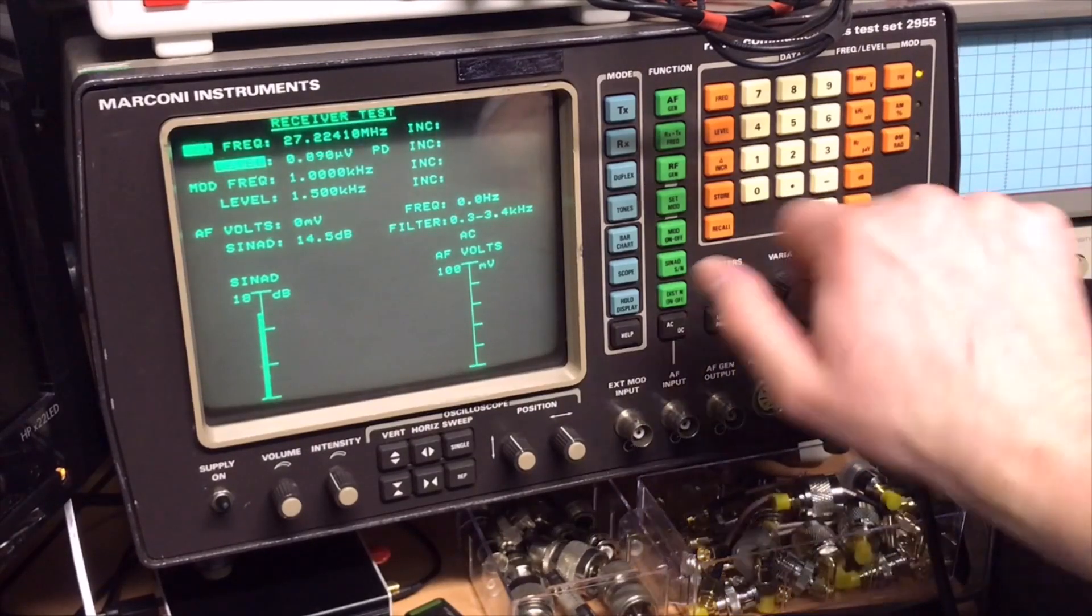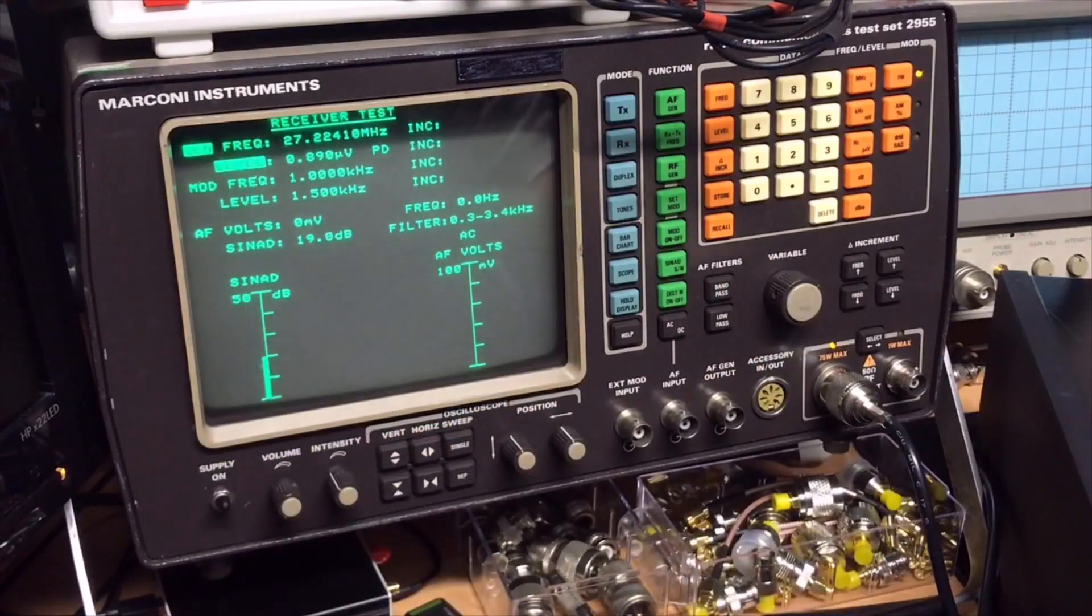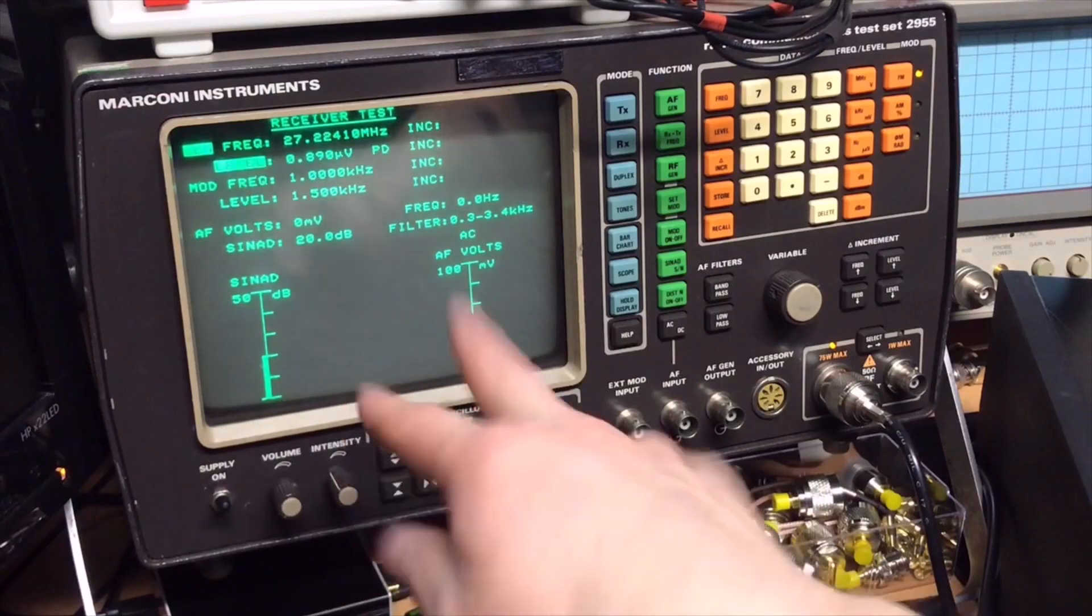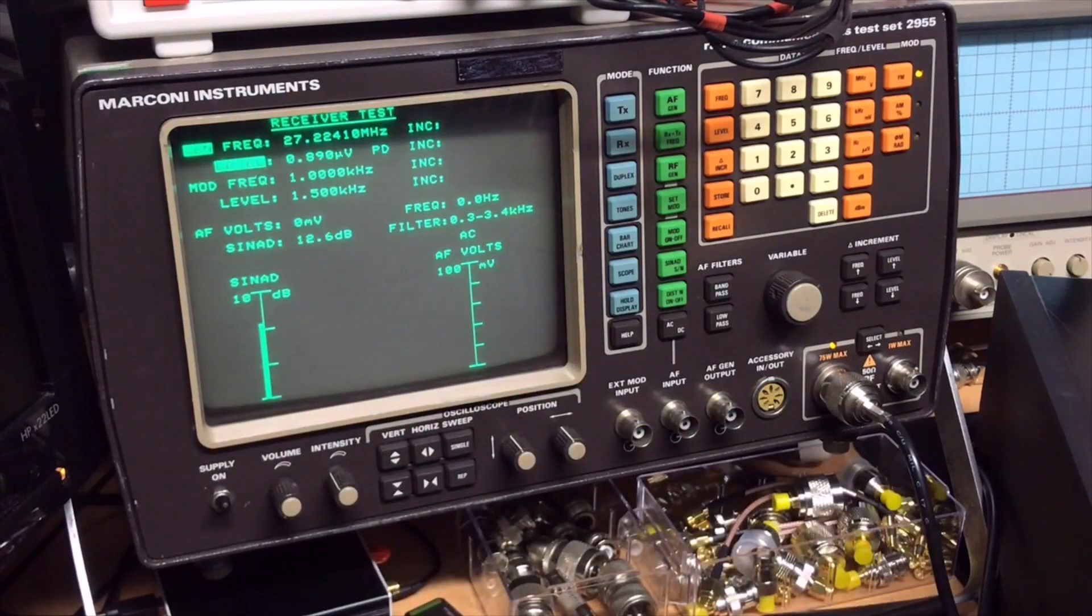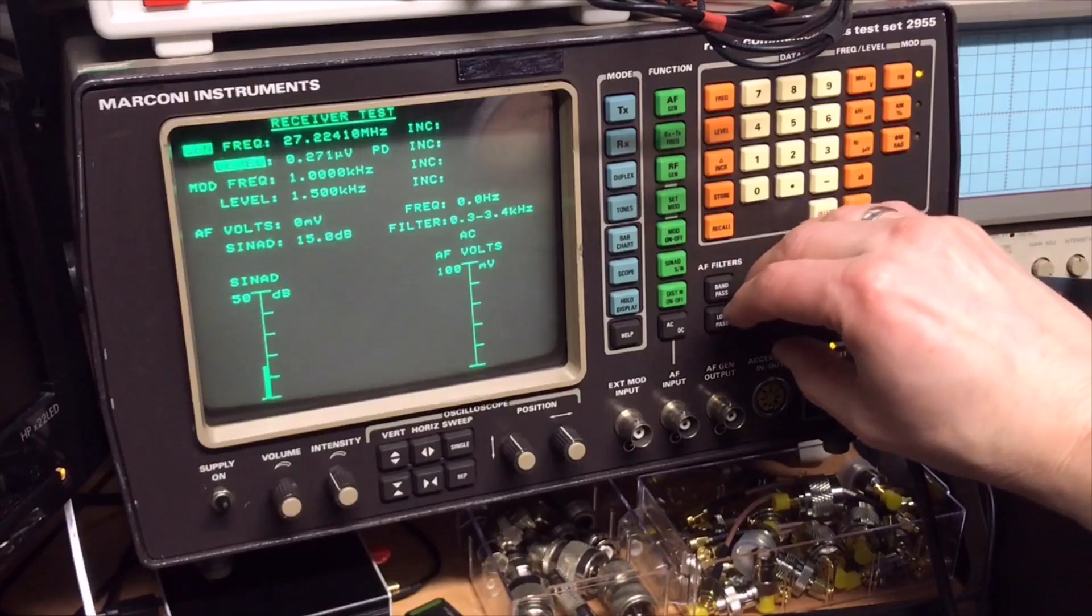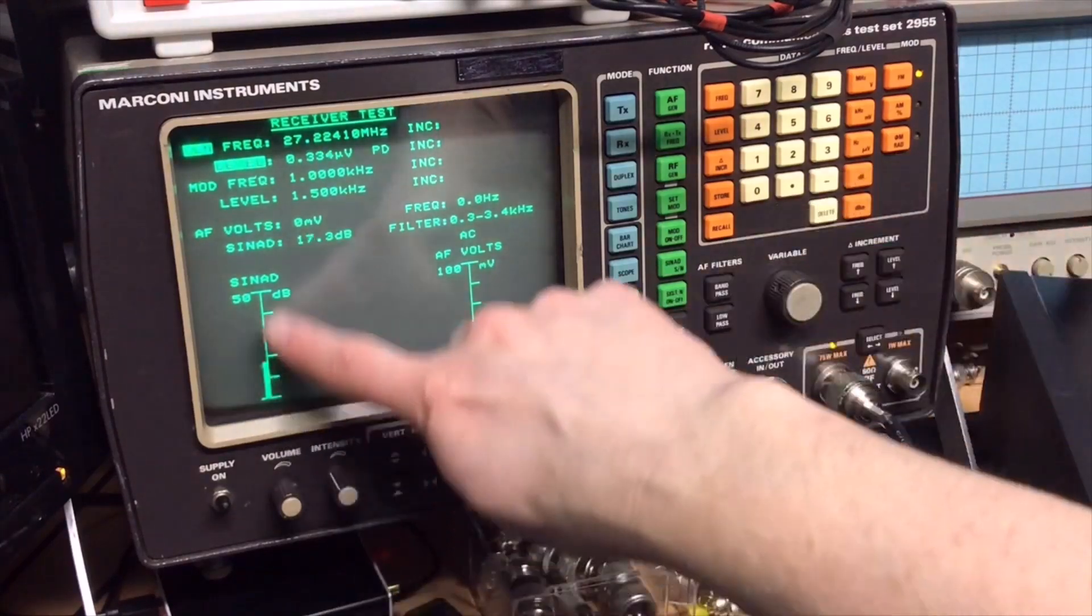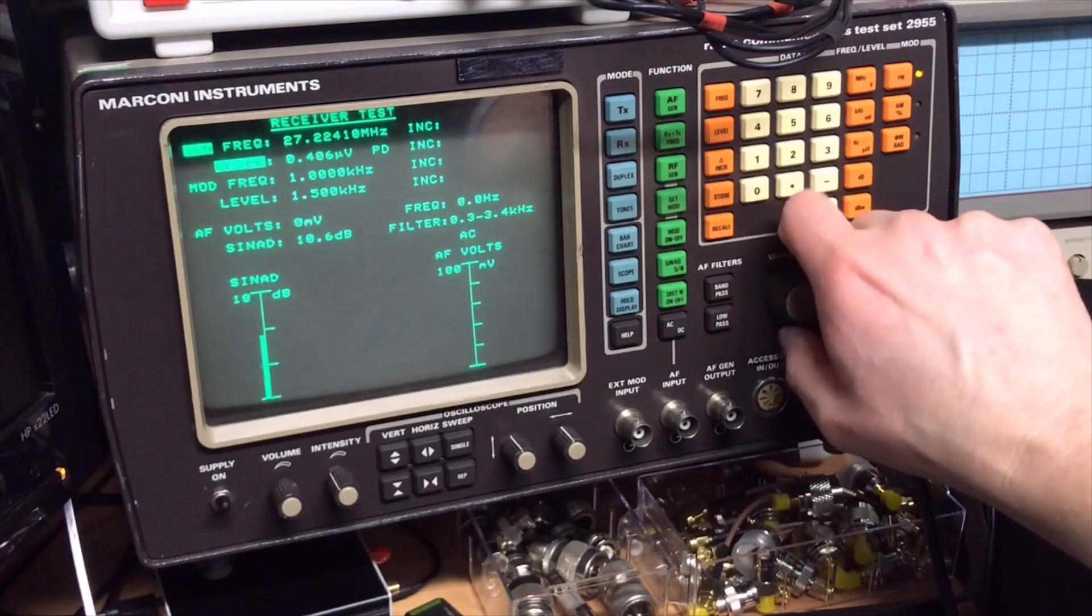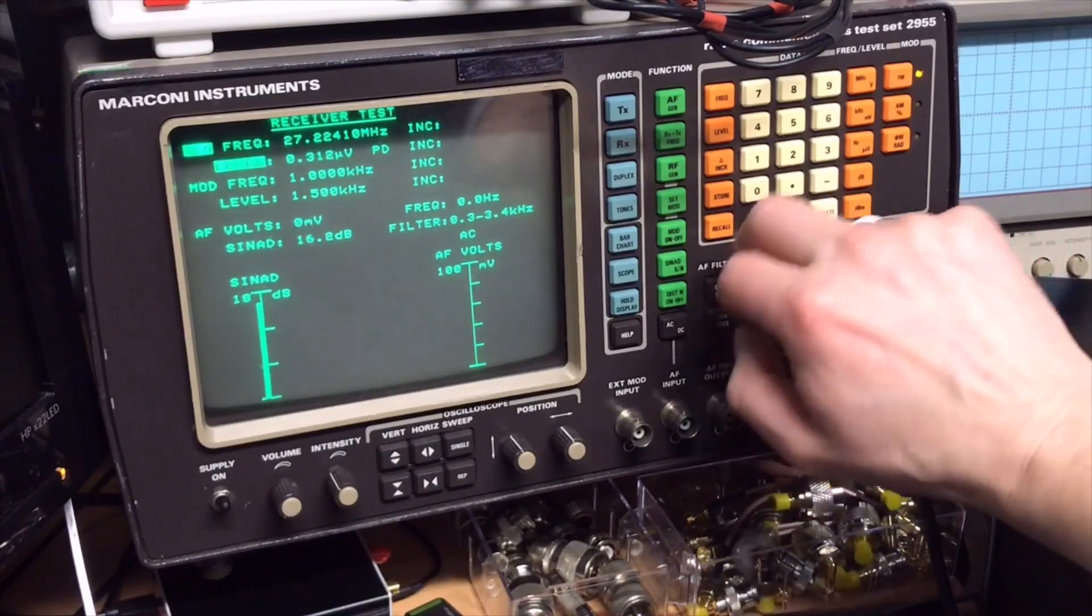And then you can also do a SINAD measuring. Then it's a signal noise ratio. And what you need to do then you need to put the output from the speaker into the input and then it will calculate the noise ratio. But I usually do it with my ear because this sounds good and then it starts to be worse. And that is exactly what the SINAD is doing. So if your hearing is good you don't necessarily need a SINAD measuring. But this one is good.